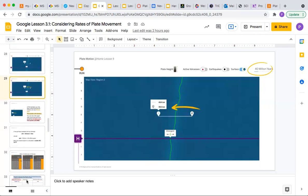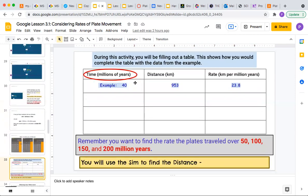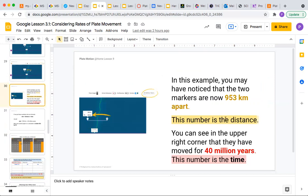I'm going to show you the chart first. Notice how here's the example is 40. It's 953 kilometers. You're going to see that 953 kilometers is the number that is distance, and 40 million years is the number that is the time.